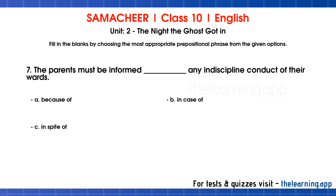Question 7: The parents must be informed — any indisciplined conduct of their wards. Options are: a. Because of, b. In case of, c. In spite of. Correct answer is b. In case of.